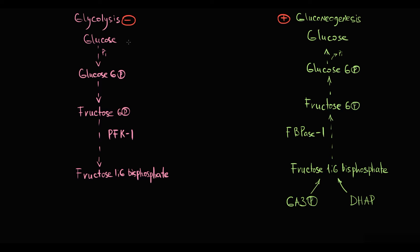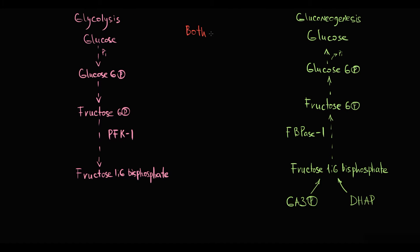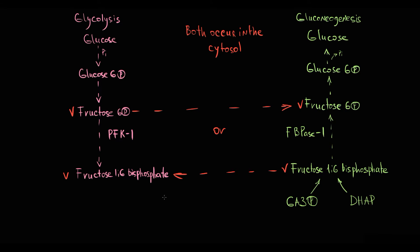Such regulation is called reciprocal regulation. We see that both these processes occur in the cytoplasm and they share the same intermediate metabolites, including fructose-6-phosphate and fructose-1,6-bisphosphate. This reciprocal regulation is provided basically by shunting of intermediate metabolites from one pathway into another, which is the fastest regulation possible.